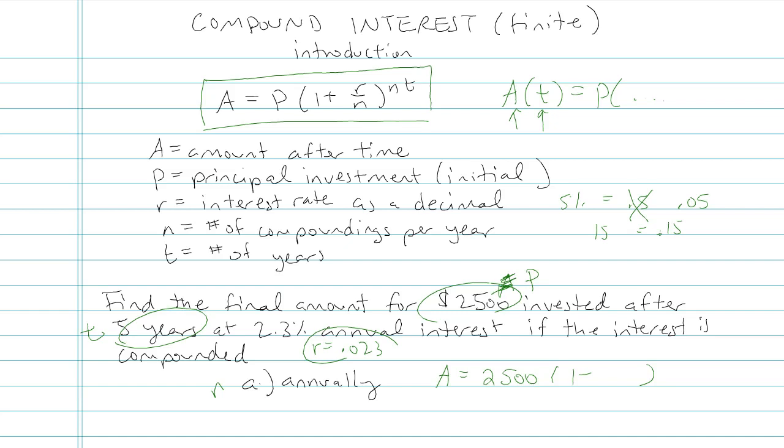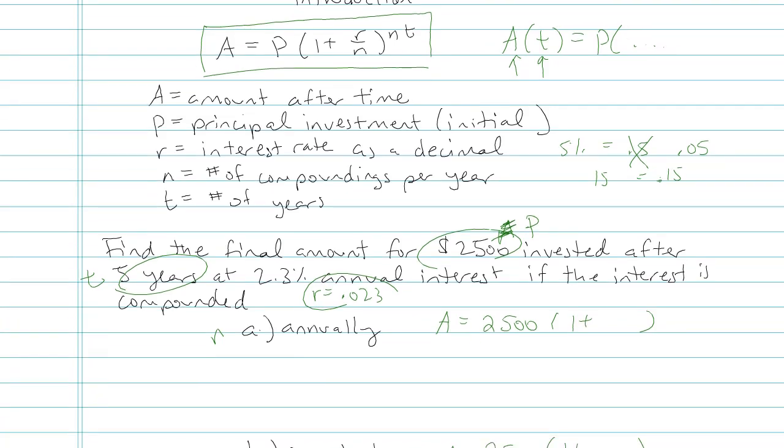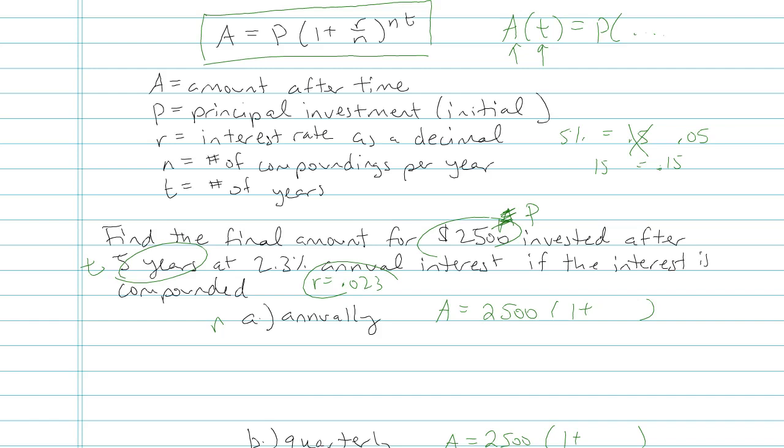In the parentheses, we'll always start with 1 plus. And then our insurance rate, they told us, was 2.3 percent. So that'll be .023 over something for each one. It's all the same.